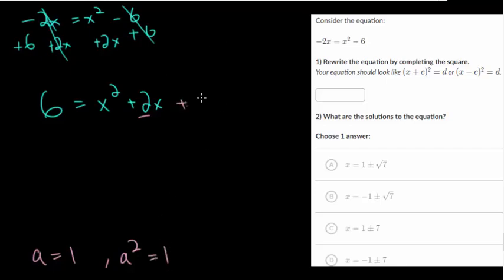So adding 1 on each side of the equation, we get 7 on the left. And on the right, this is now a perfect square. We have x plus a, but a is 1. And we're squaring that.